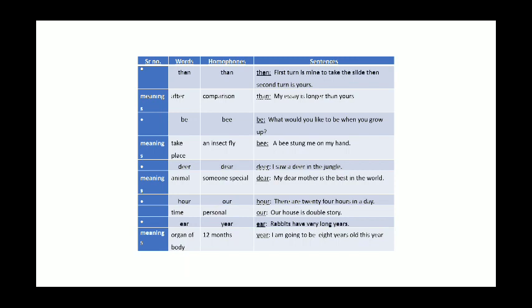The last pair that we are going to study today is ear and year. Basically the first word is spelled E-A-R, that is an organ of your body, and the next word is spelled like Y-E-A-R, that is a year of 12 months. Rabbits have very long ears. I am going to be 8 years old this year.